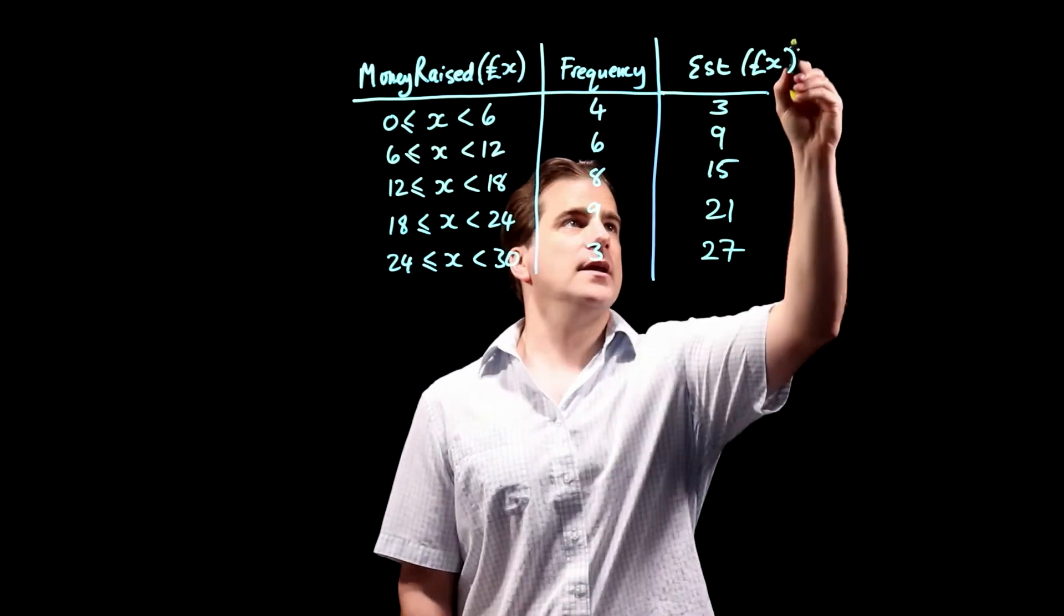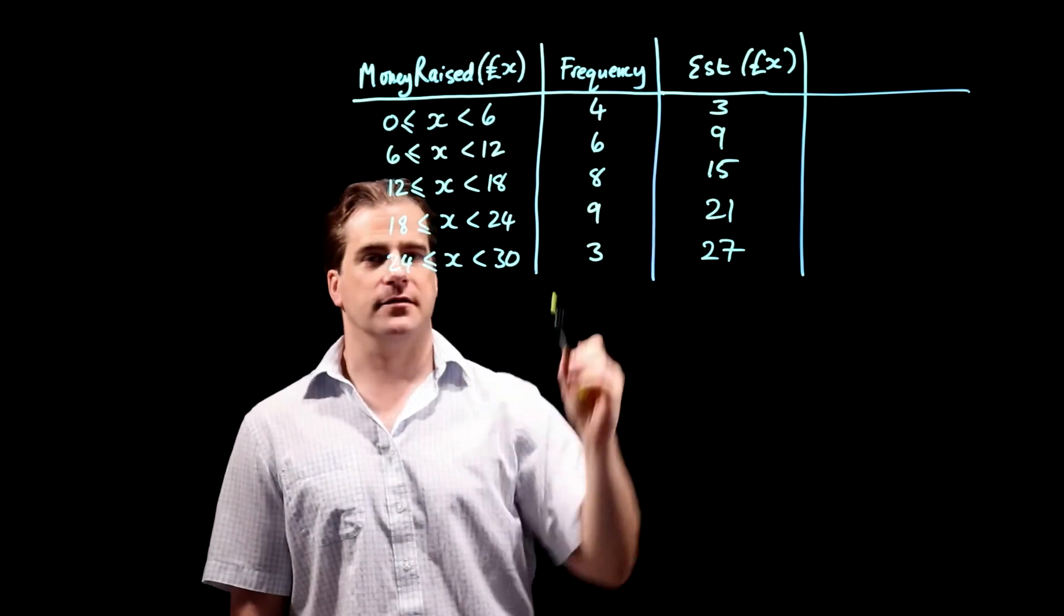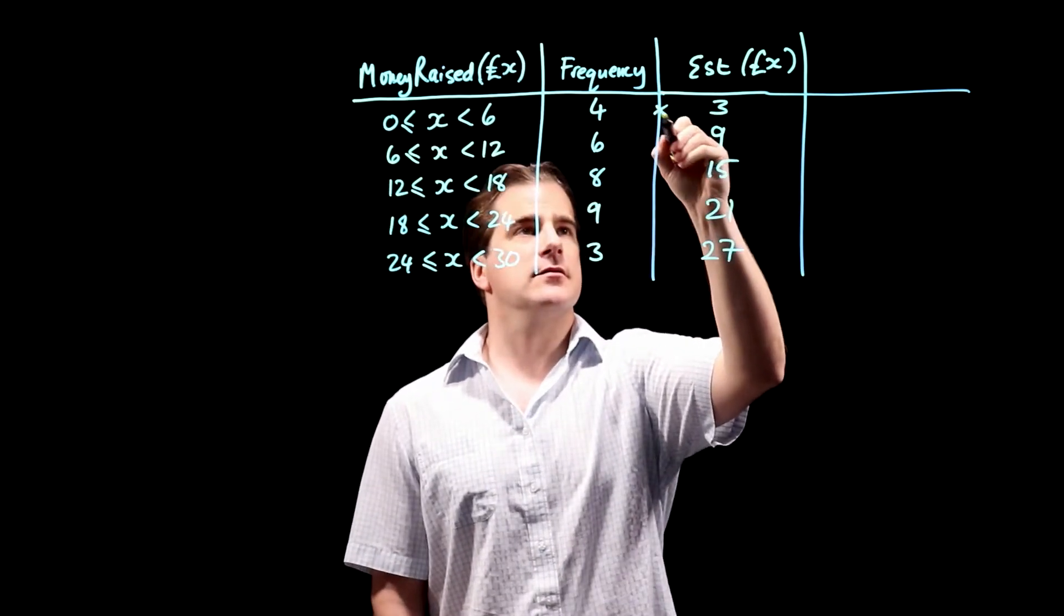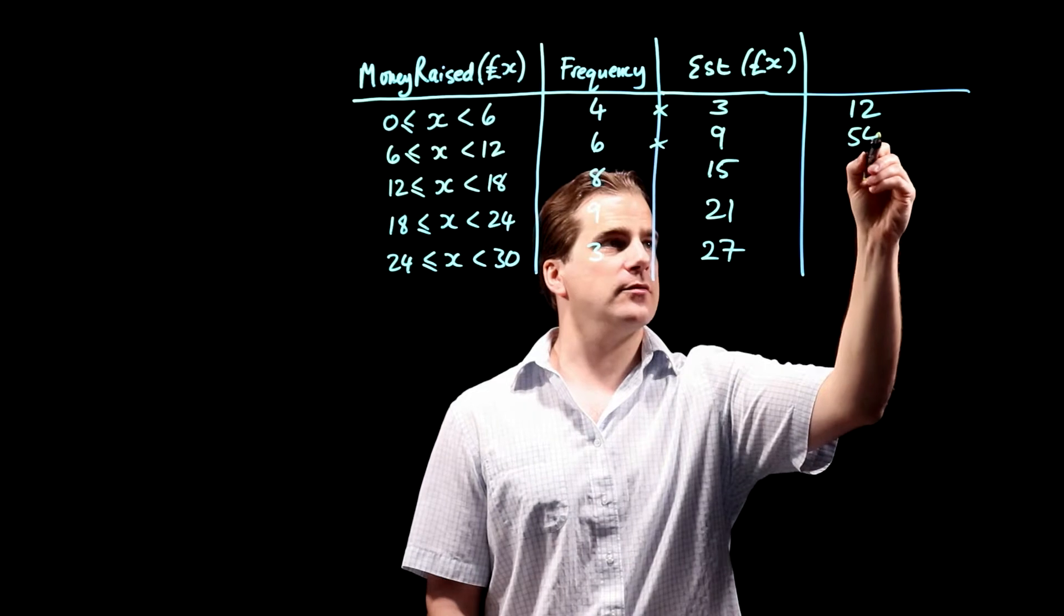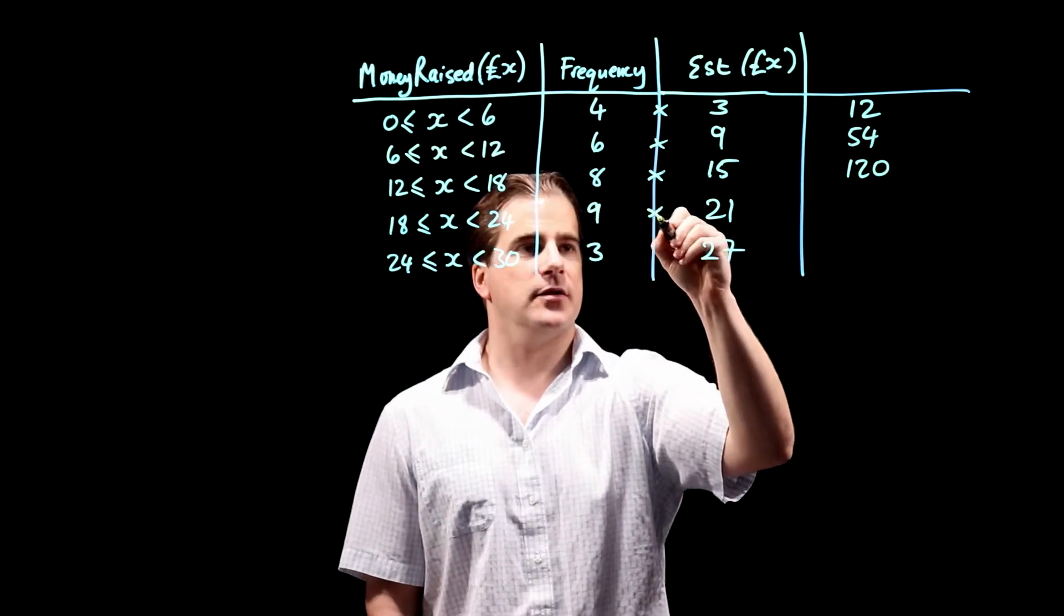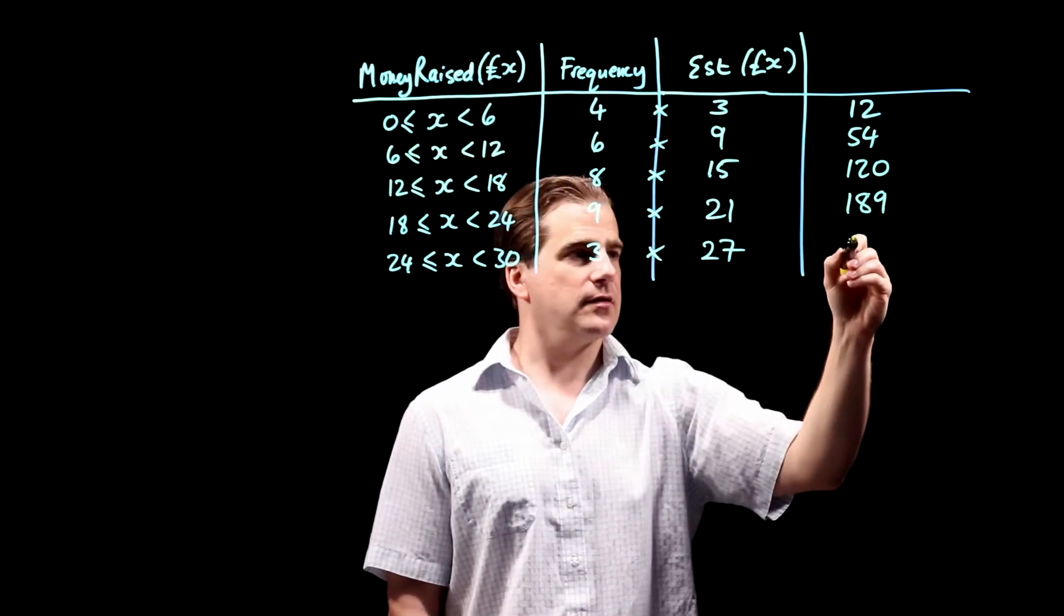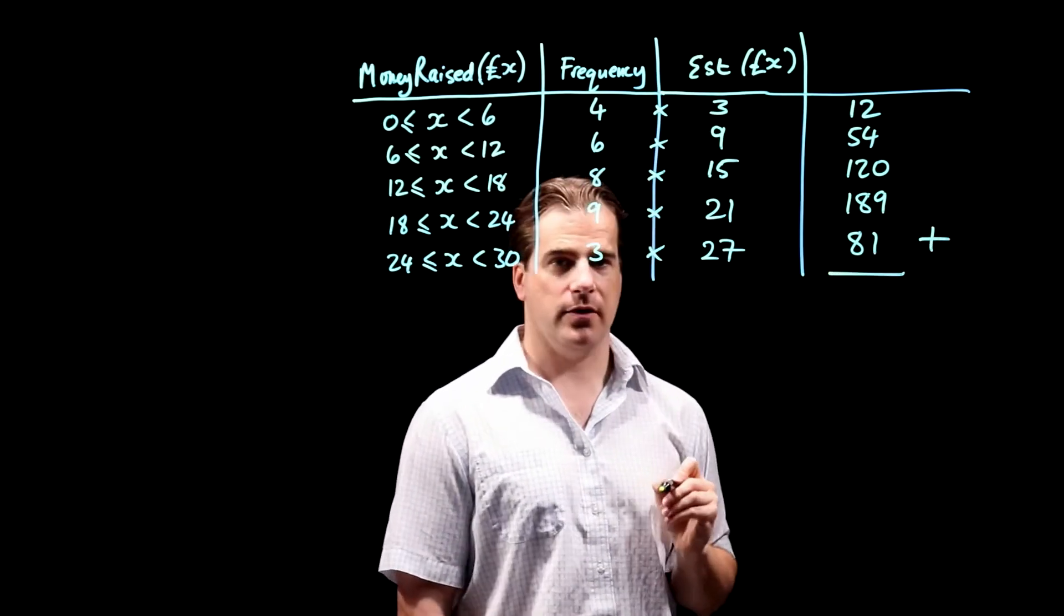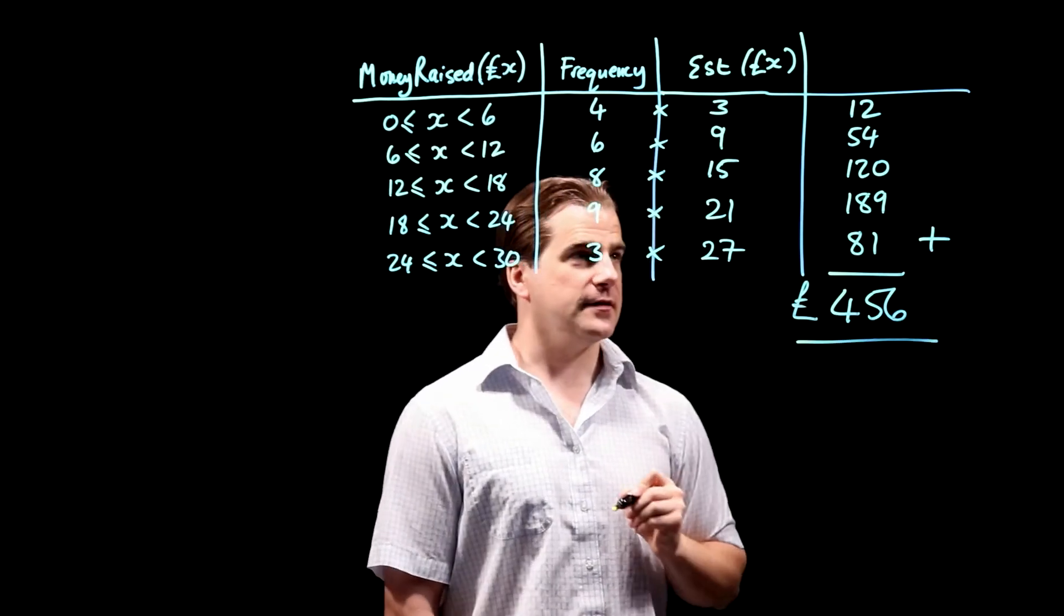So then you need another column and you just multiply that by that. Because if four people have each made three pounds, then to do four times three, they've made a total of 12 pounds. Same here, six nines, 54 pounds, eight fifteens, 120 pounds, nine twenty-ones, 189 pounds, three twenty-sevens, 81 pounds. So the total is all that lot added up. And that comes to 456 pounds. That's how it's done.